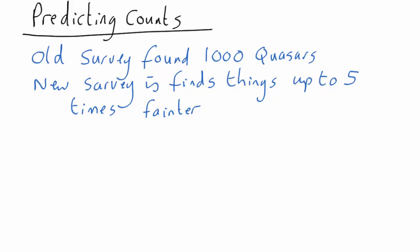Okay, so what we do know is that the number you expect to see is proportional to the limiting flux to the minus three halves power. How do we use that? Well it looks a bit tricky. We know that the limiting flux is going to decrease by a factor of five. That means the new limiting flux divided by the old limiting flux is going to be equal to one over five. But how does that help us with this equation? We don't know what either of the limiting fluxes actually are. All we know is the new one is five times less.